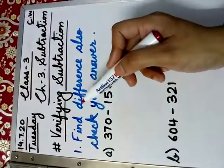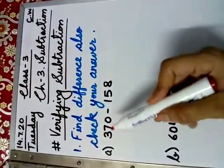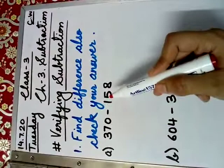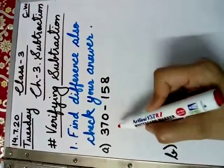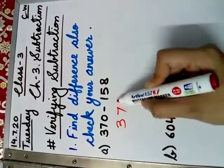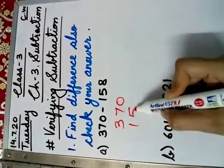Verifying means to find whether the answer is correct or not. How to find? First, let us find the difference. We have two numbers 370 and 158. We will find the difference. First, write the bigger number 370 and then the smaller number.